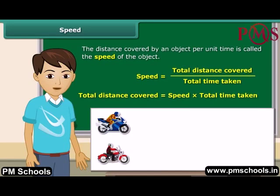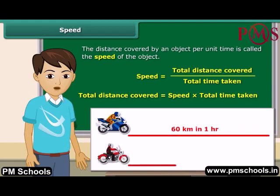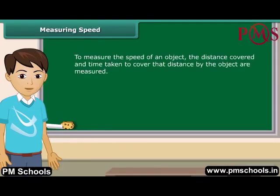You know that your brother's motorbike covers a distance of 60 km in an hour, whereas his friend's bike covers 40 km in one hour. Let us now check the claims. The speed of your brother's bike is 60 km per hour and that of his friend's bike is 40 km per hour. Your brother's bike is certainly faster than his friend's because its speed is greater.